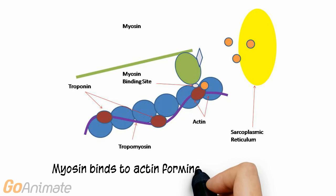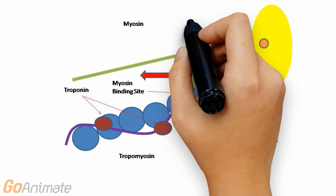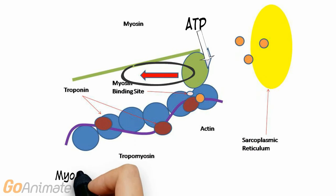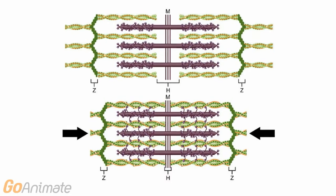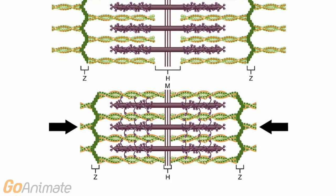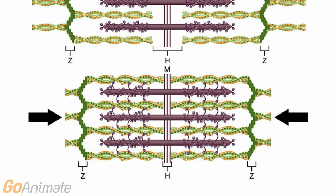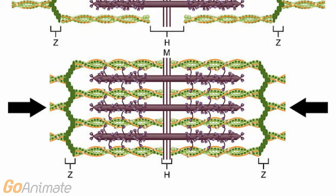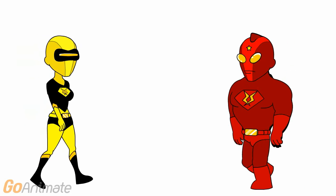Now myosin can bind with actin, forming a cross bridge. Myosin moves actin and is powered by ATP. The sarcomere shortens and the muscle contracts. This process repeats as long as the stimulation and calcium are present. Actin and myosin are finally together.